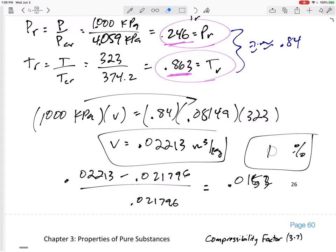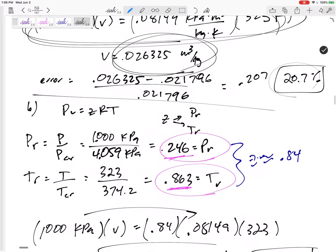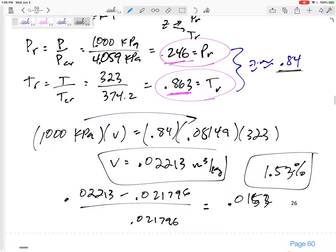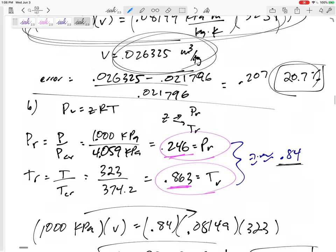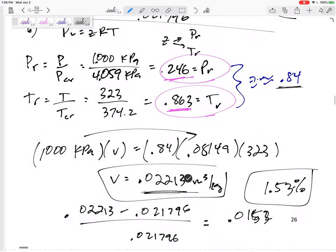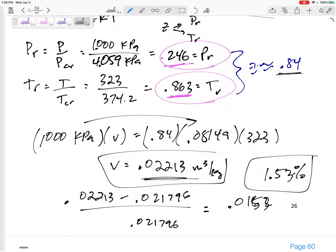So the error is more like 1.53 percent. So do you see that it is a lot more accurate compared to the 20% off that we were just using the ideal gas? This one, the compressibility factor 0.84 allowed us to get closer, not quite, not exact. The best answer was from the property table. But this was a good guess. PV equals ZRT of 0.02213 with an error of only about 1.5 percent.